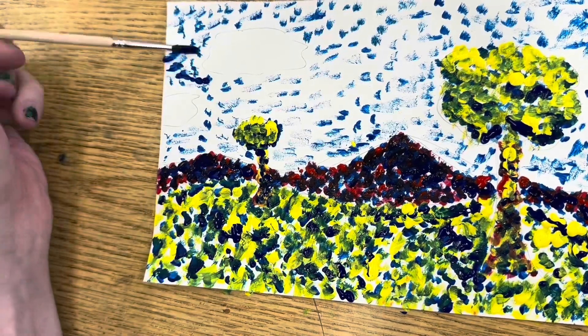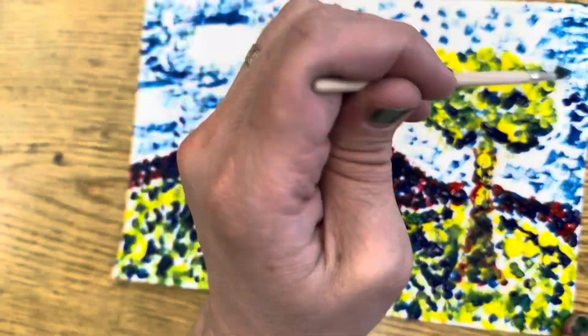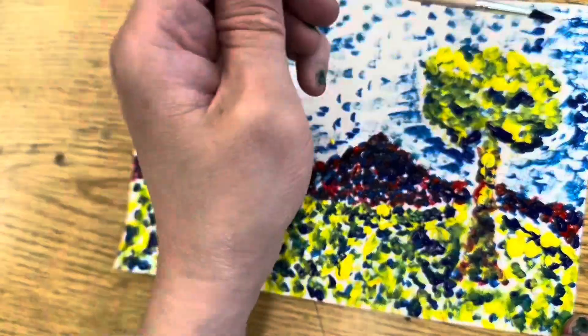Because my paintbrush isn't a perfectly round dot, I'm using the different parts of it to make different shaped dots, like the side of the brush or the tip of the brush.